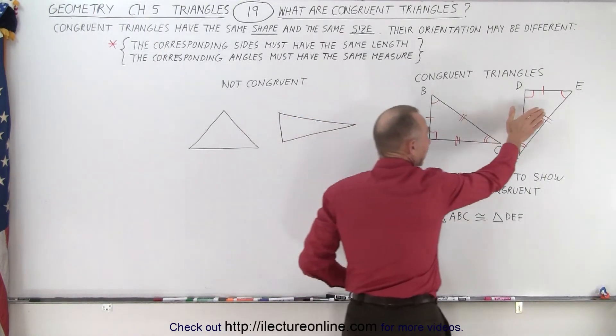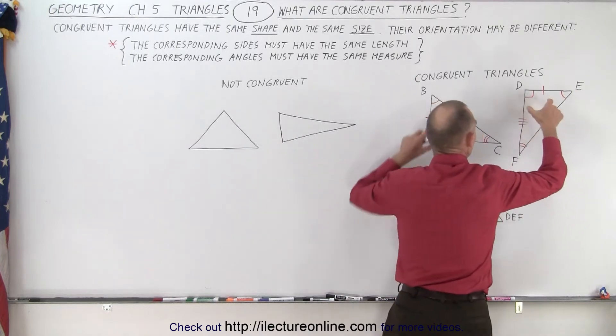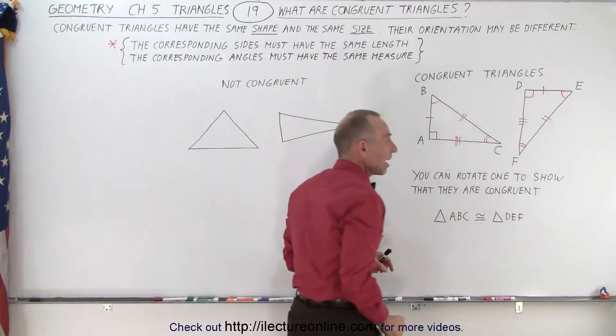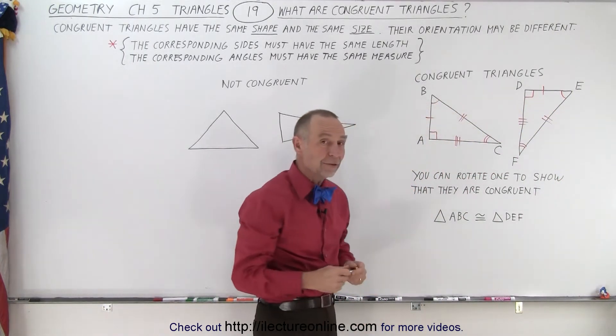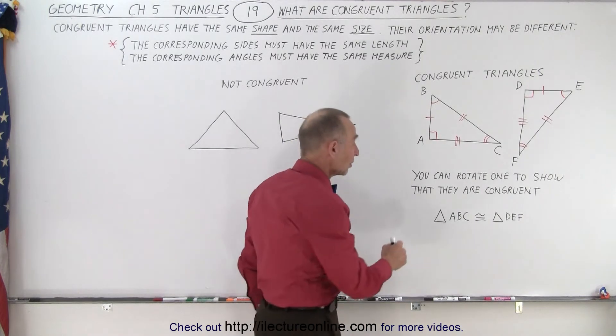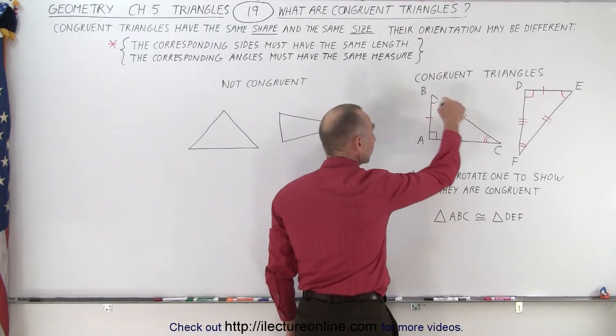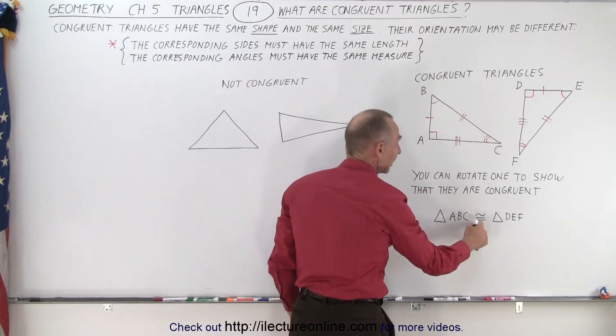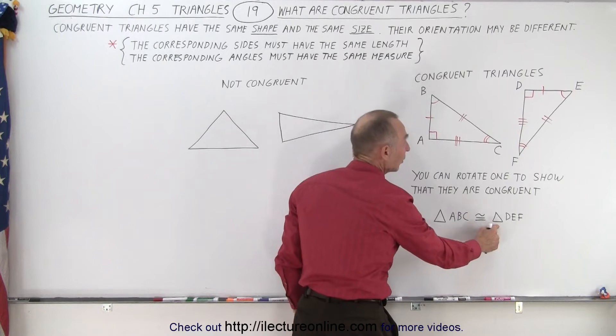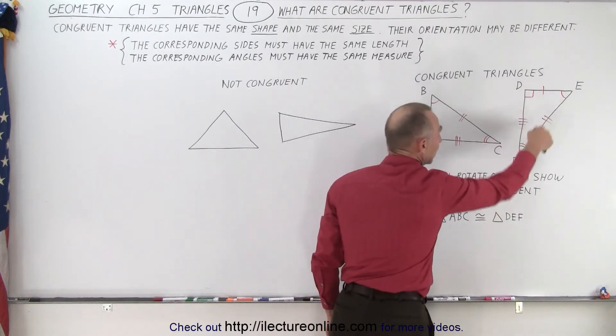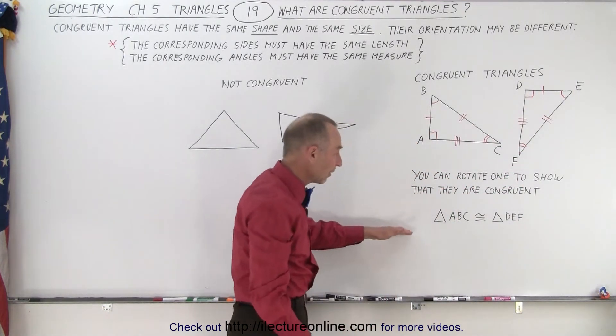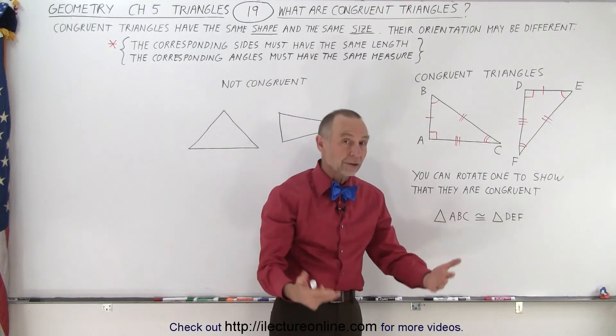You can rotate this one right here 90 degrees this way to show that they will look exactly the same. And if you want to know how to write it, you can see here that triangle ABC, which indicates the three corners of the triangle, is congruent to triangle DEF, again the three corners of the other triangle. So this is how you actually write it when two triangles are congruent.